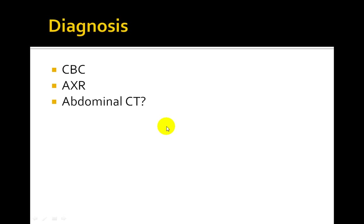In terms of diagnosis, a CBC may show signs of leukocytosis. Diagnosis can be based on an abdominal X-ray, which can be used to rule out free air, ileus, or signs of obstruction. Colonoscopy or barium enema are sometimes suggested.